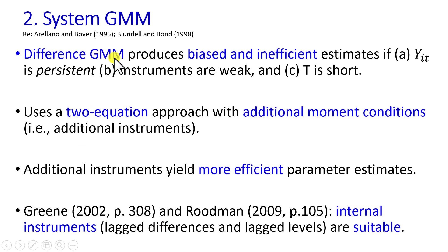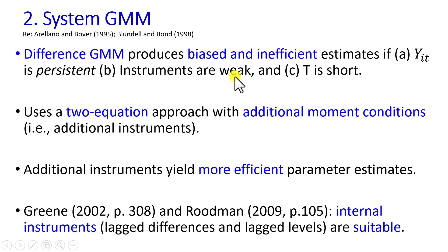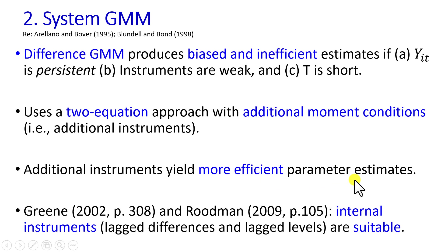Difference GMM produces biased and inefficient estimates, in particular when the model is persistent in that it follows a close random walk, and instruments are weak in that they are weakly correlated with the underlying regressors and time period is short. System GMM uses a two-equation approach with additional moment conditions, that is additional instruments, to deal with those issues. The additional instruments have been found to yield more efficient parameter estimates.